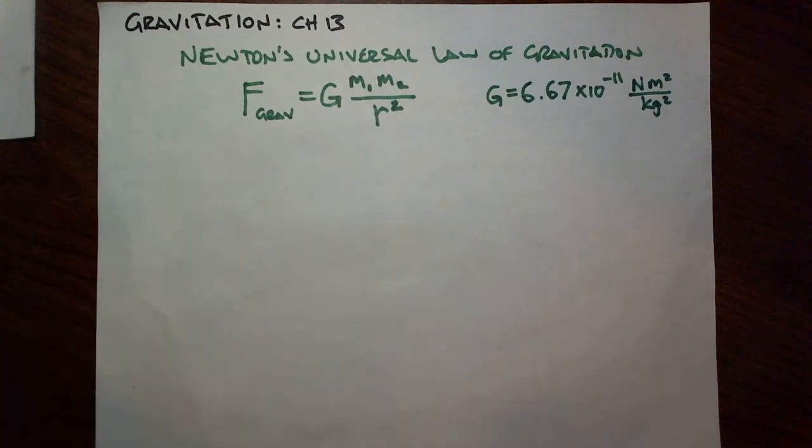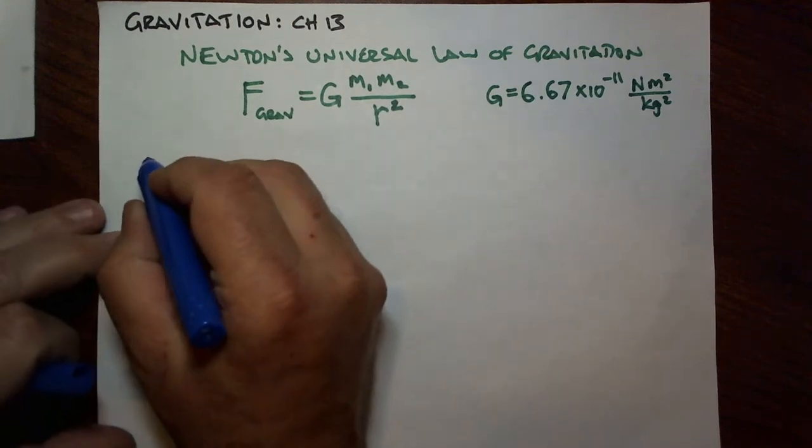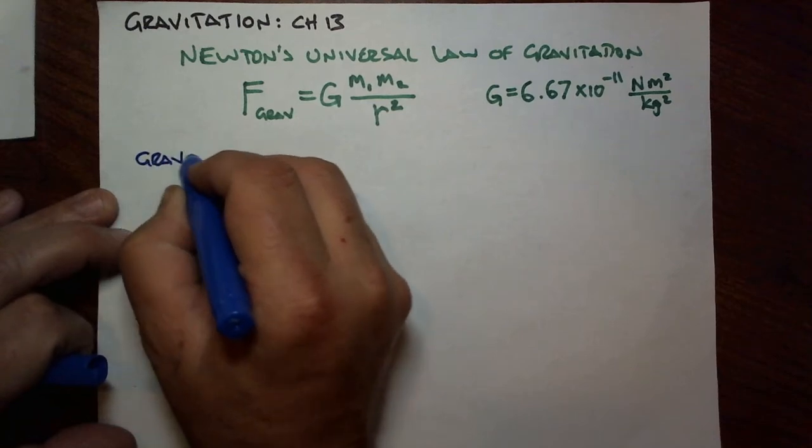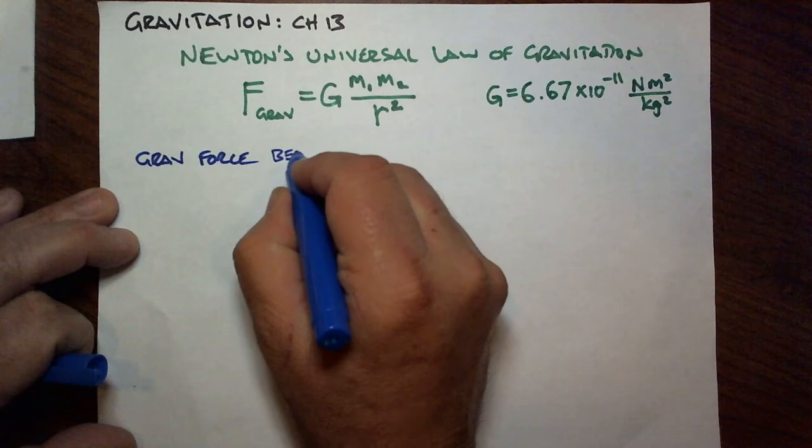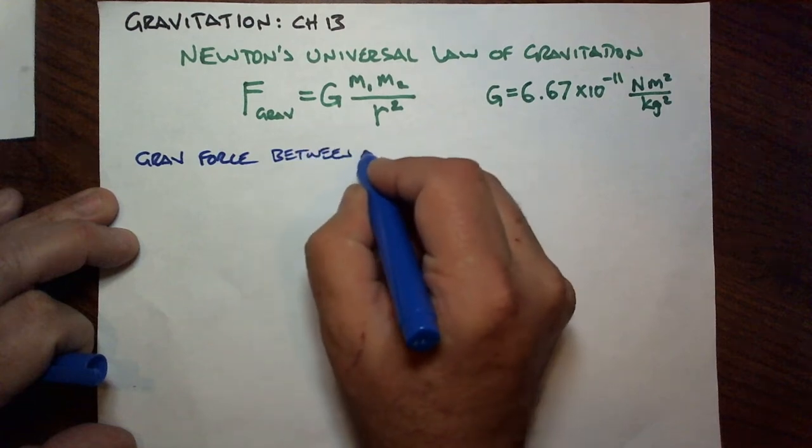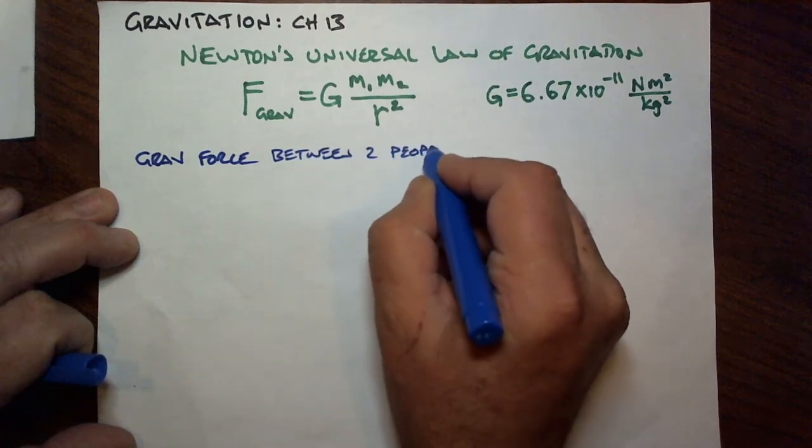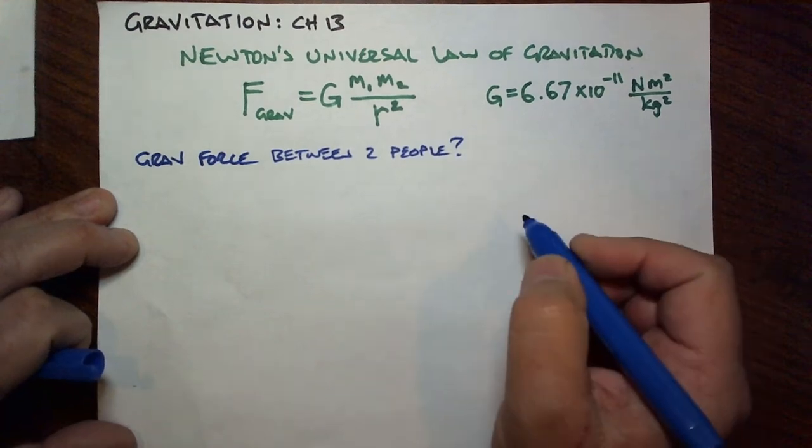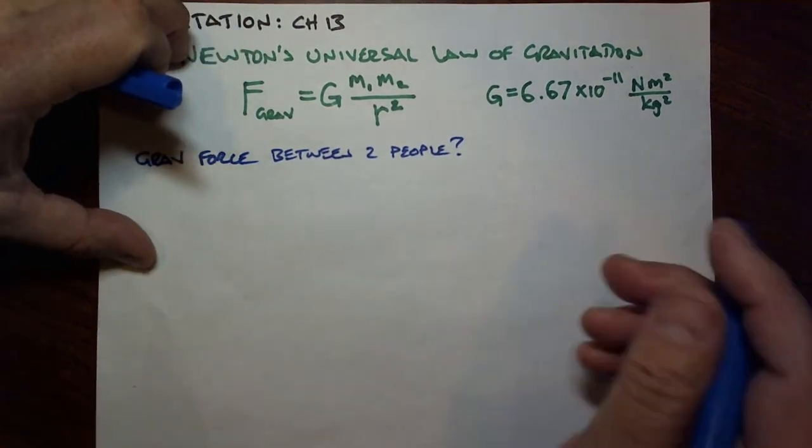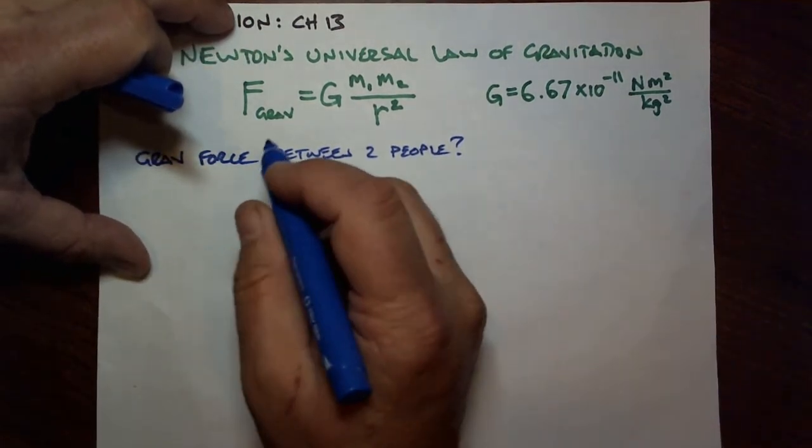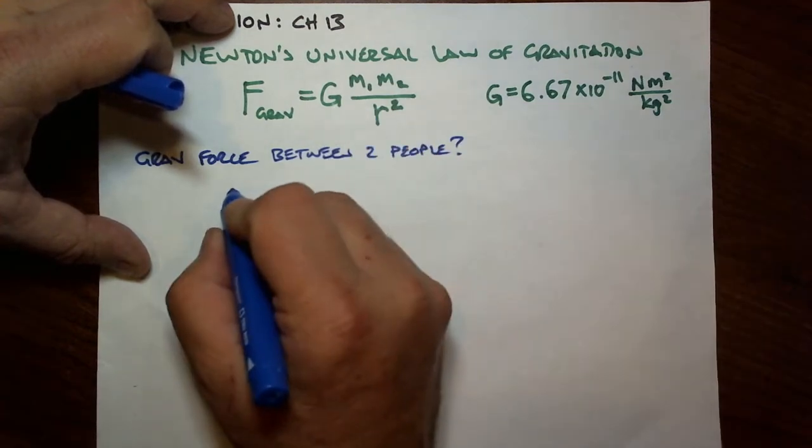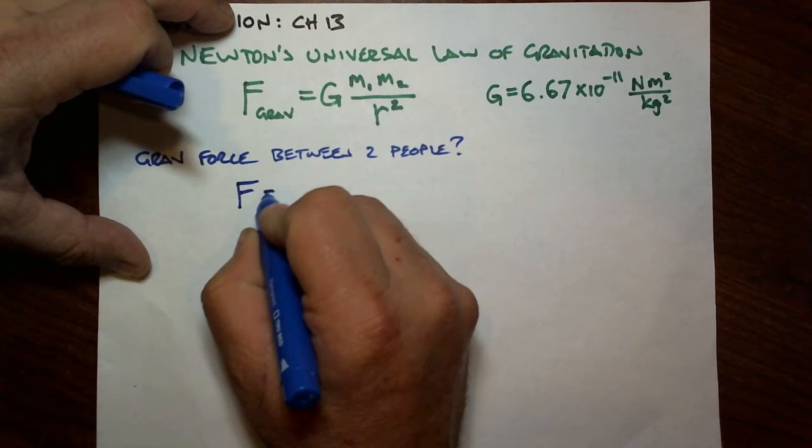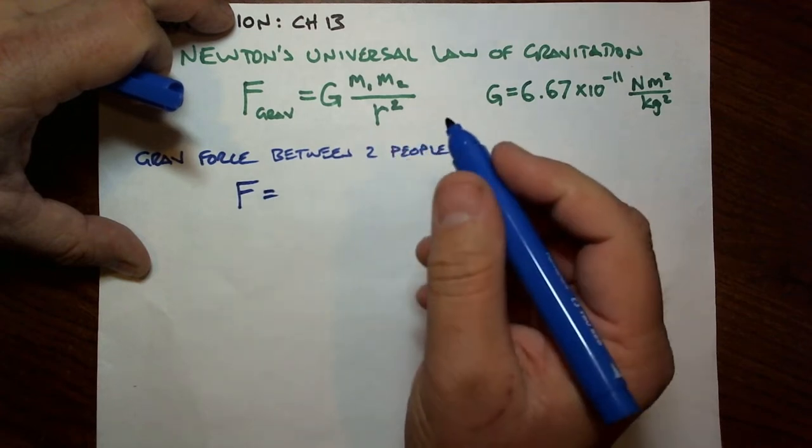So let's figure out exactly how weak gravity really is. What is the gravitational force between two people? I usually pick people who are sitting next to each other in the classroom, but since we're in this era of social distancing, let's find the gravitational force between two people who are maintaining social distance.